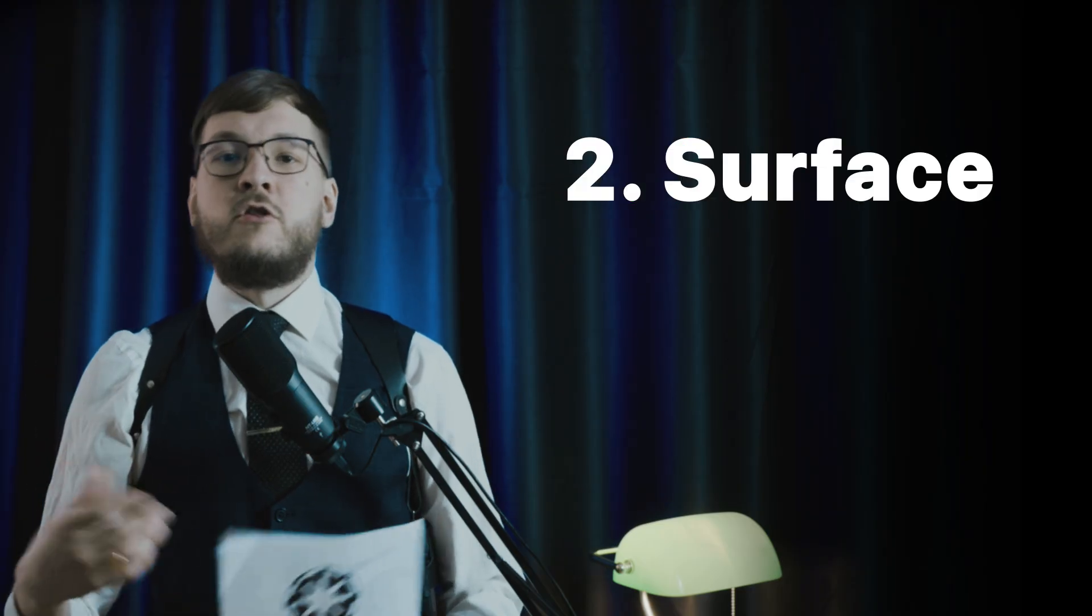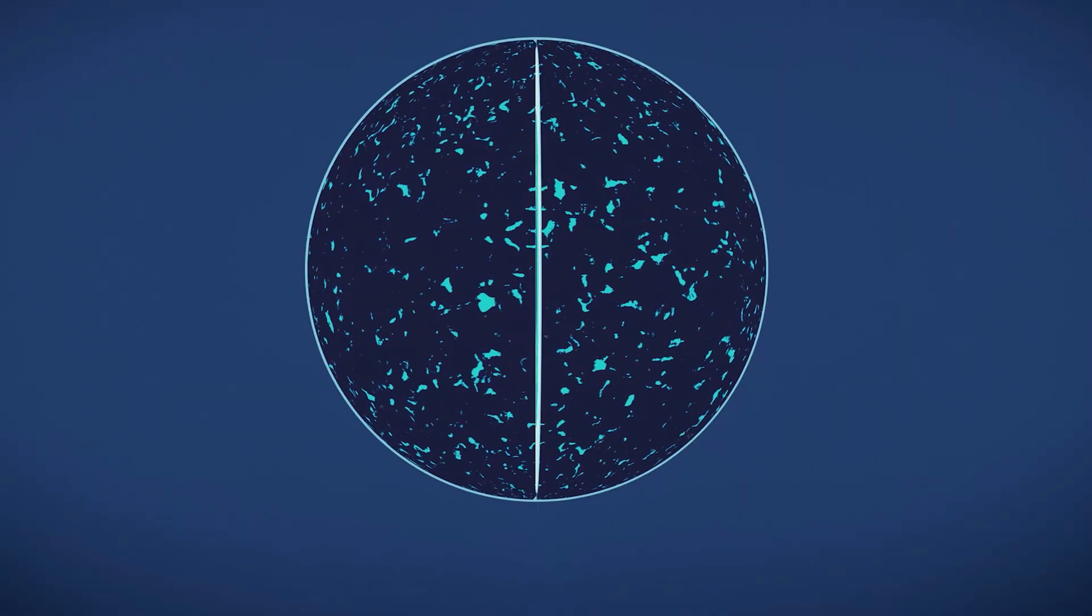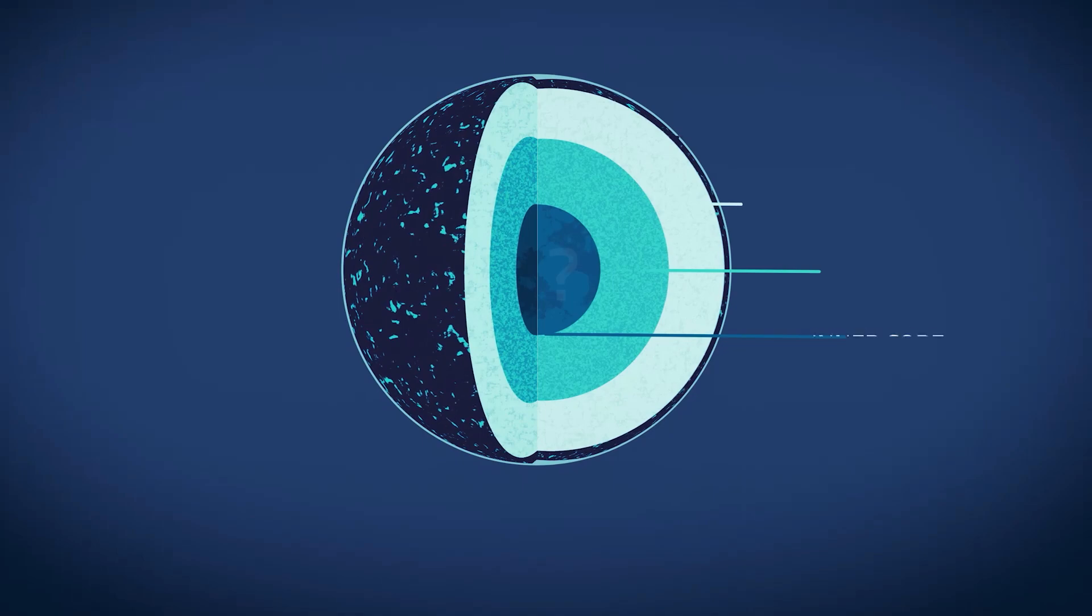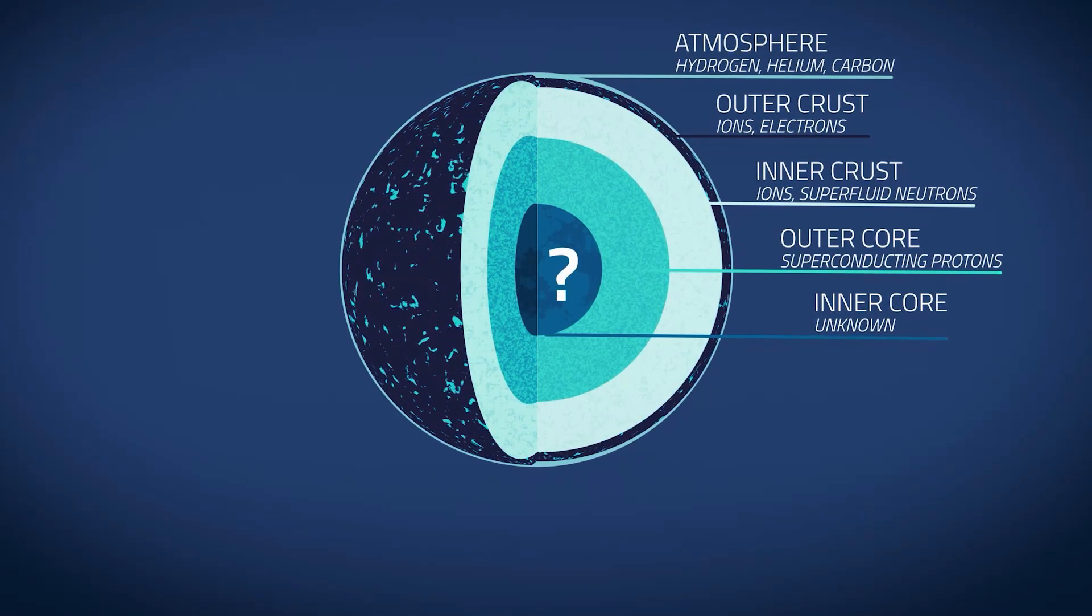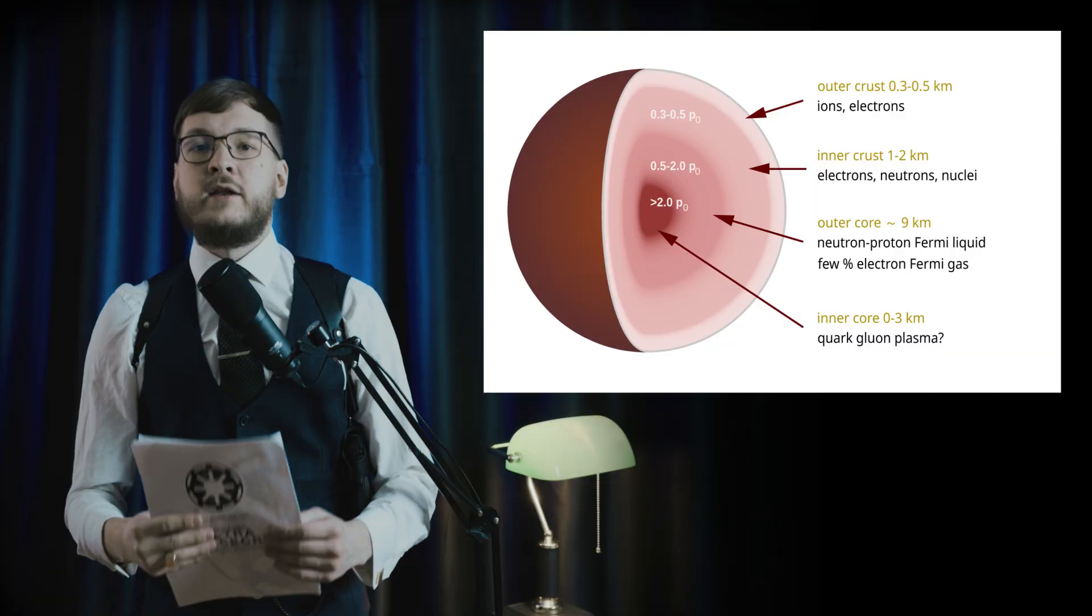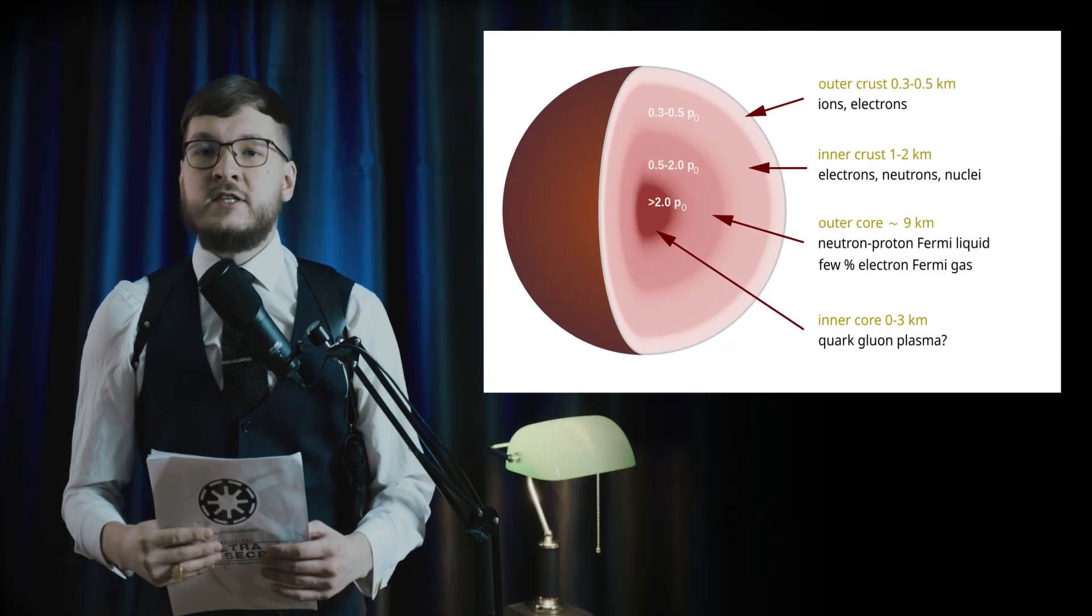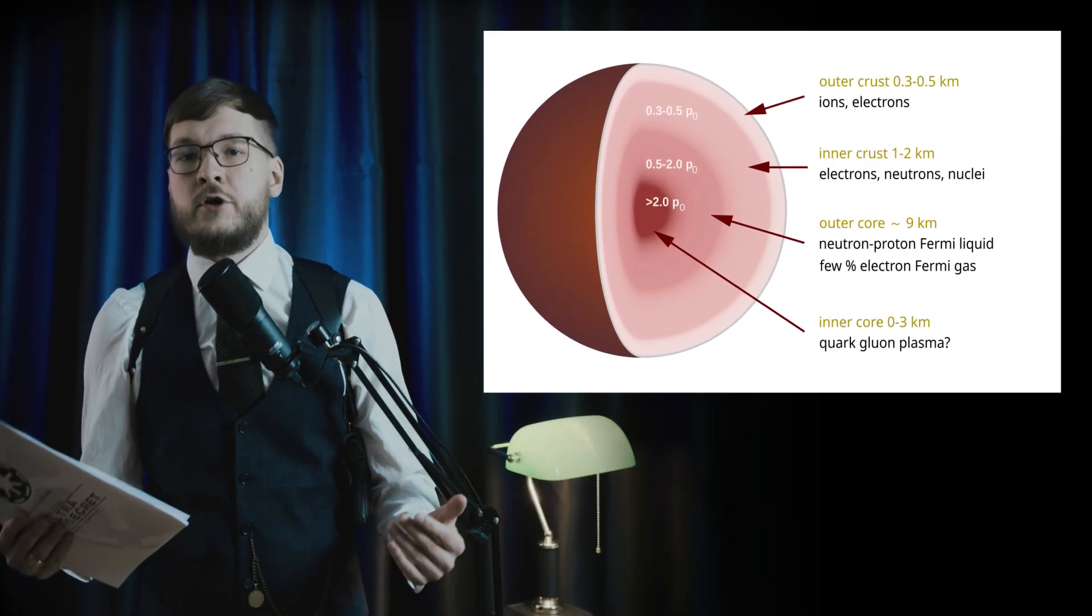Second, the surface itself. Neutron stars have a thin crust, just a few hundred meters thick, composed of tightly packed atomic nuclei forming an ultra-hard crystalline lattice of neutron-rich matter.